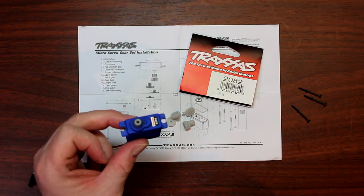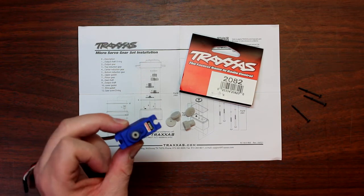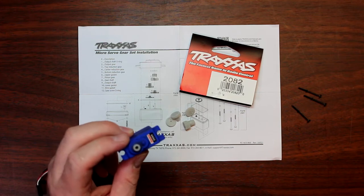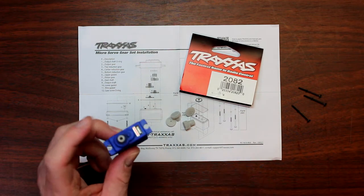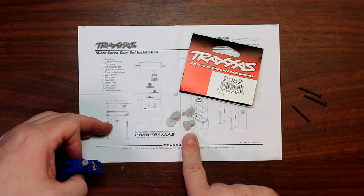Basically, this is the servo they use in the Traxxas E-Revo 1/16 and a couple other machines. This one here has busted gears inside that we're going to swap out with these gears here.